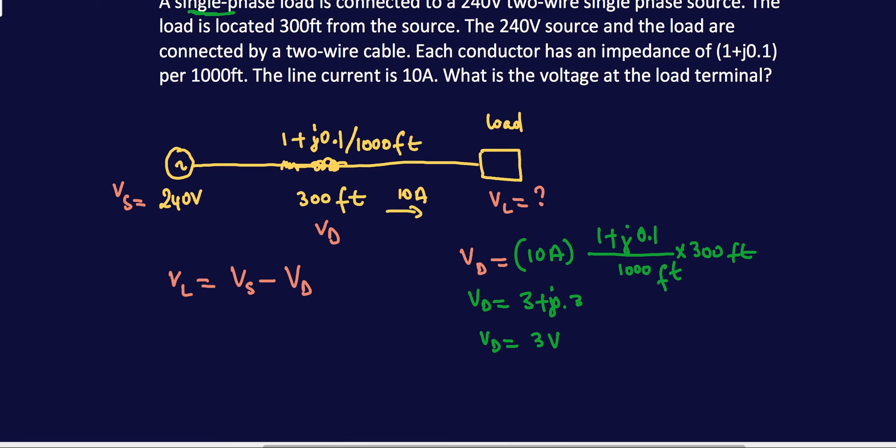So the return path is 3V, so that's 2 times 3. If we're going to get to our VL, it is equal to 240, the source, minus 2 times 3. So this is equal to 240 minus 6, which is 234V.